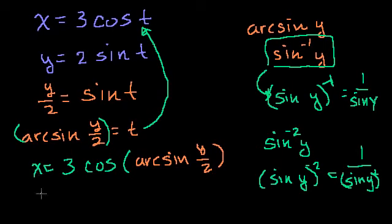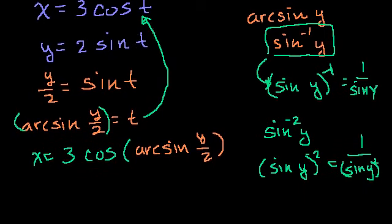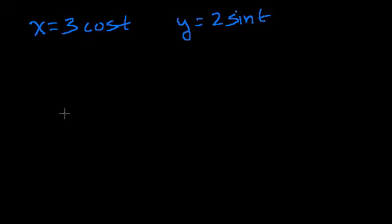But that's not the purpose of this video. The purpose of this video is to see if there's any way we can remove the parameter that leads to a more intuitive equation involving x and y. And what we're going to do is a bit of a trick, but it's something that shows up a lot, especially when you deal with polar coordinates. So let me rewrite them. x is equal to 3 cosine of t, and y is equal to 2 sine of t.